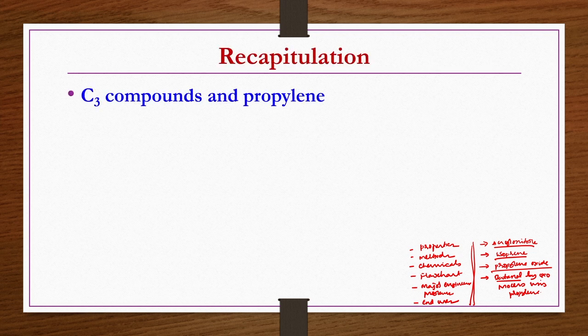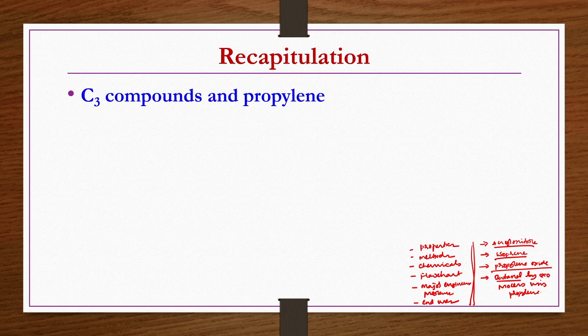Before going into today's lecture, we have a recapitulation of what was discussed in the previous lecture. We started discussion on C3 compounds and selected propylene because of the different types of chemicals that can be produced from it. We saw that ethylene is the best compound amongst olefins, but after ethylene, propylene is the one which can be utilized to produce different types of intermediates and chemicals. We discussed properties of propylene and how it can be produced.